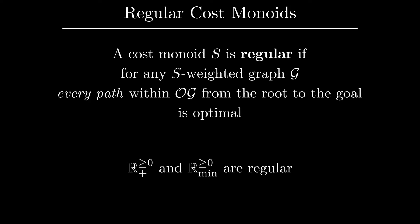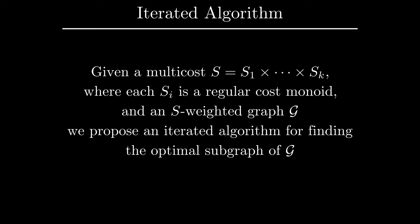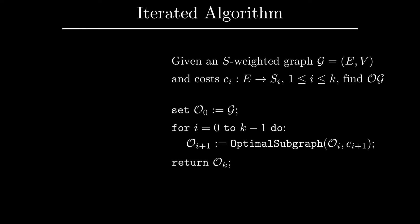Empowered with this concept of regularity, we are ready to describe the main contribution of our work. Given a multi-cost S, where each S_i is a regular cost monoid, and an S-weighted graph G, we propose an algorithm for finding the optimal subgraph of G. We assume that the cost function is given by its coordinate functions, each taking values in a regular cost monoid. Our algorithm iteratively passes to optimal subgraphs by looking at one coordinate at a time.